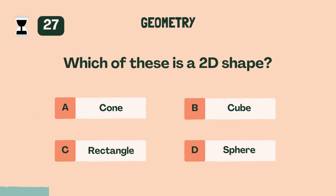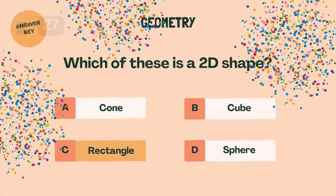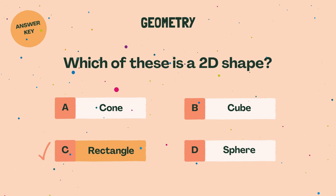Which of the following is a 2D shape? C. Rectangle.